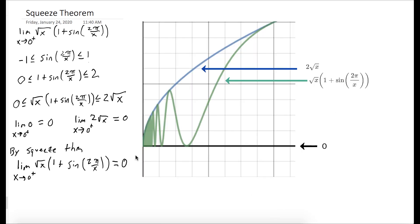If you're not convinced by our algebra, take a look at the graph. The blue curve is y equals 2 square root of x. The black line is y equals zero. And the green curve is the function we were looking at.